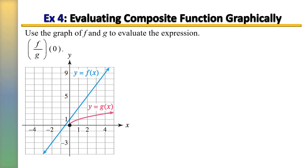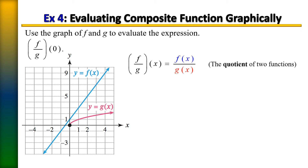In this example we're asked to use the graph of f and g to evaluate the expression f over g of zero. We're going to evaluate f of x at zero and g at zero, then divide those outputs. Starting with f of zero: going to x equals zero on the f of x graph and moving up one, so f of zero equals one. Next, finding g of zero: starting at zero, we are already on the g of x graph, so our output is zero.